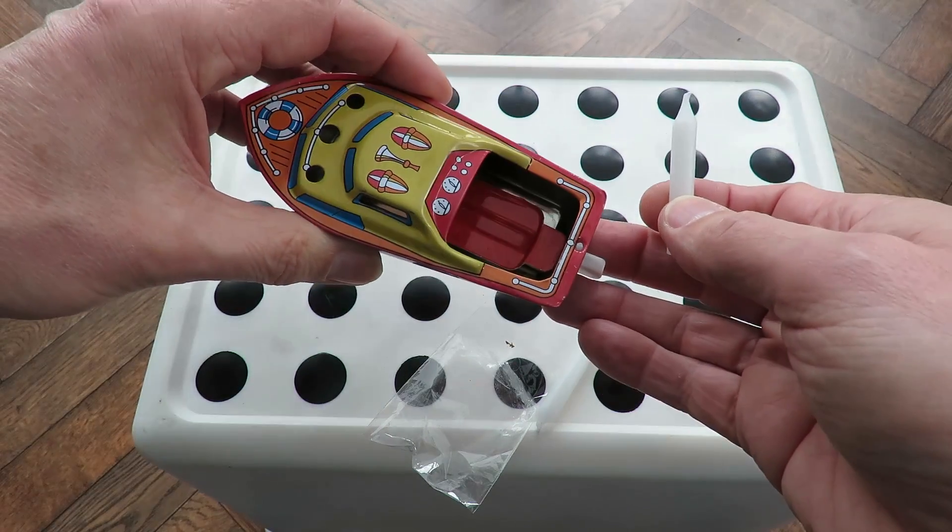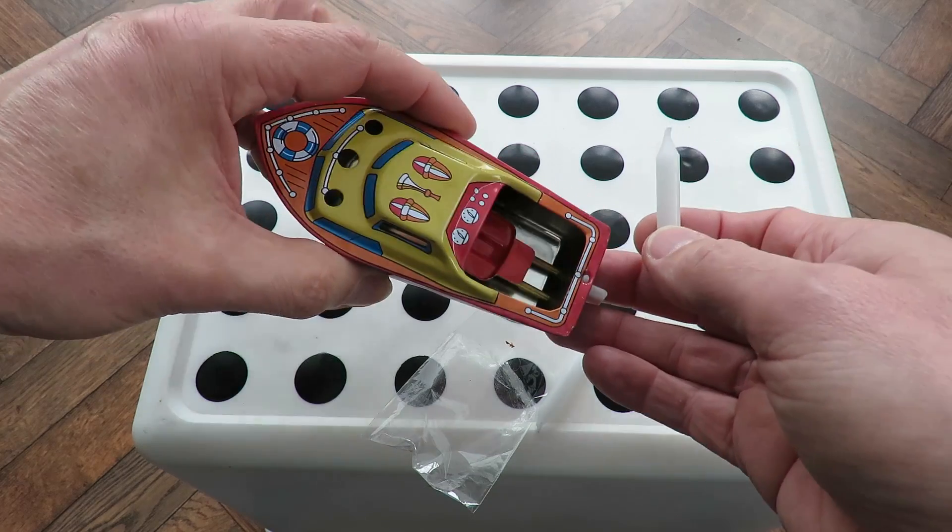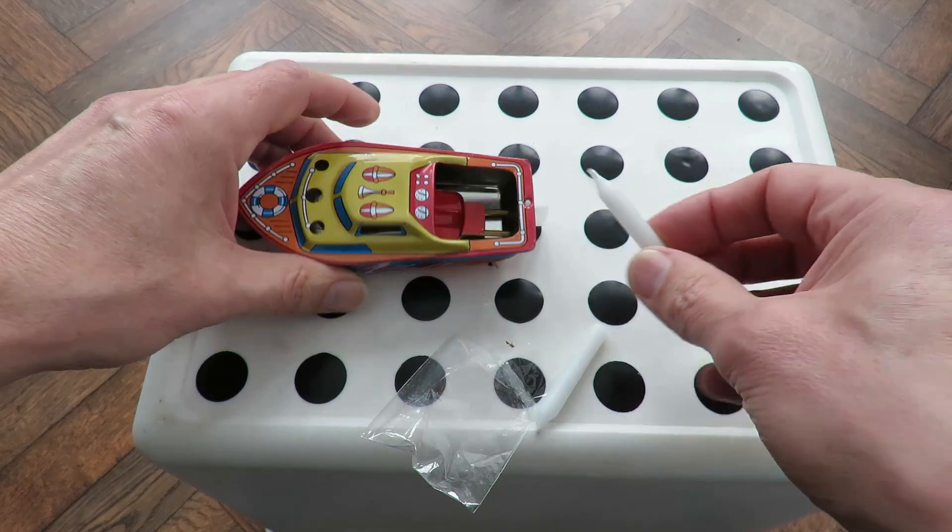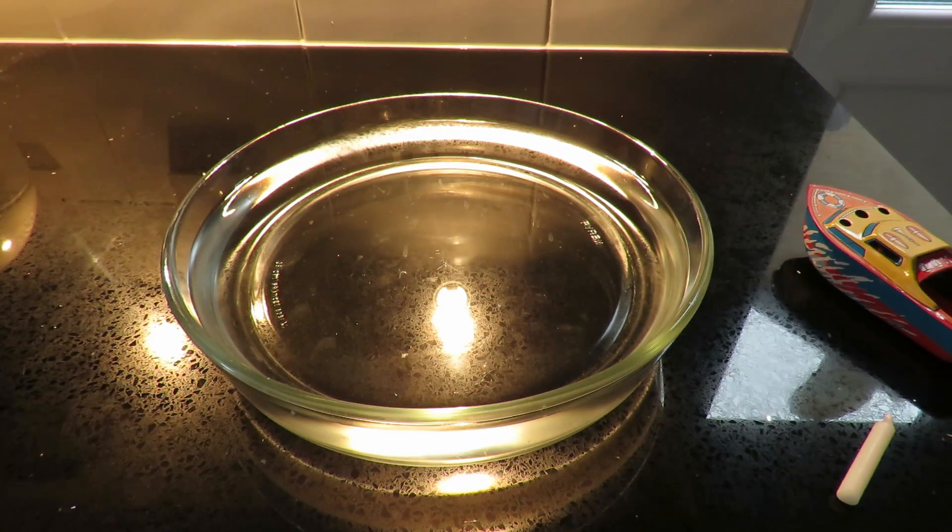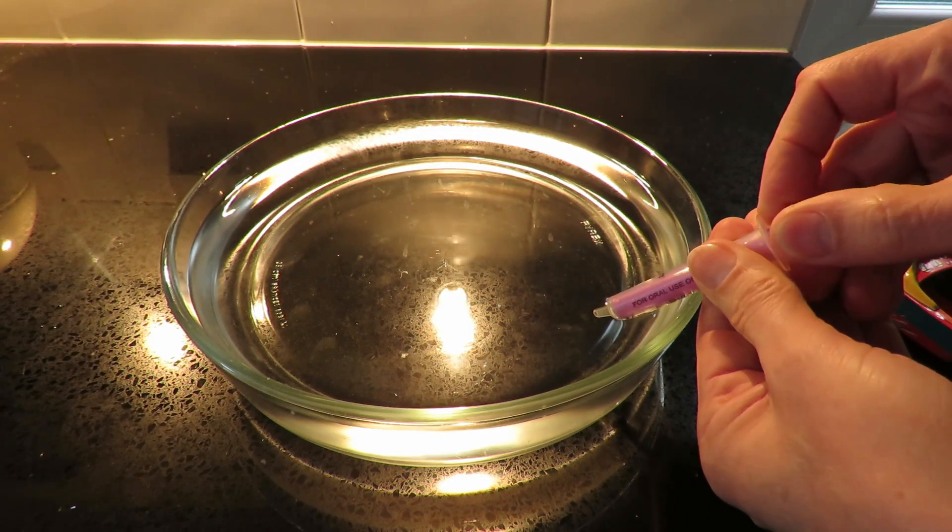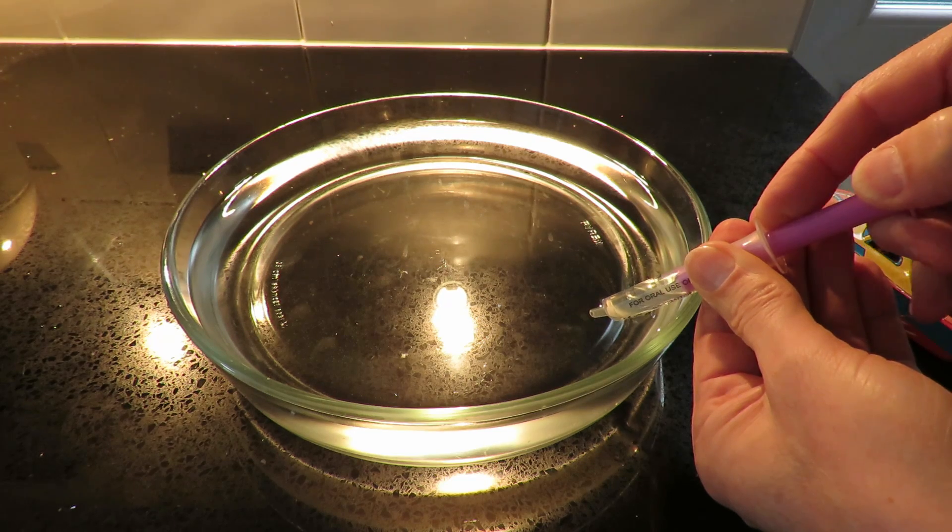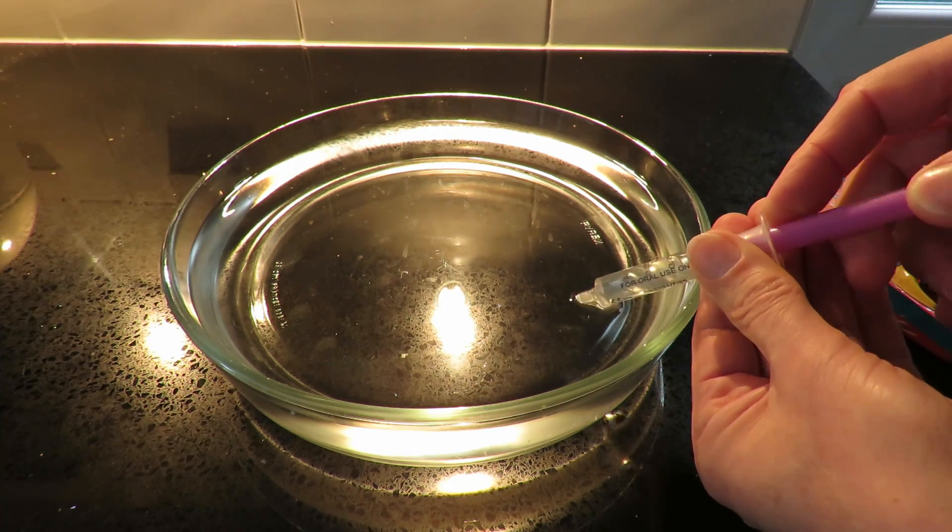And the flame on the candle is underneath the boiler. So we've got a measure of adjustment there. Right, we'll get some water and try it out. A bit noisy in the background because we've got the washing machine on.